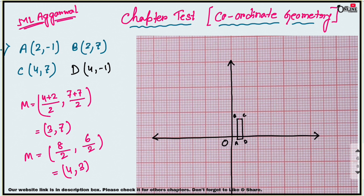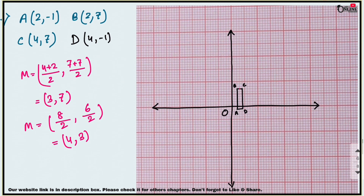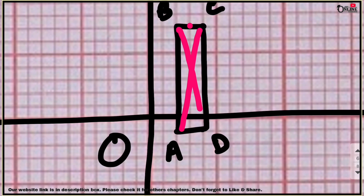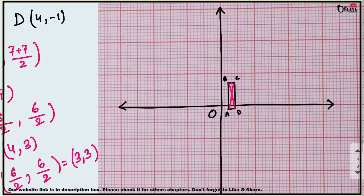Now find the point of intersection of the diagonals. In a rectangle, the two diagonals bisect each other. So just find the midpoint of diagonal BD: (4+2)/2 and (7+(-1))/2, which gives 6/2 = 3 and 6/2 = 3. So (3, 3) is the coordinate of the point of intersection of the two diagonals.